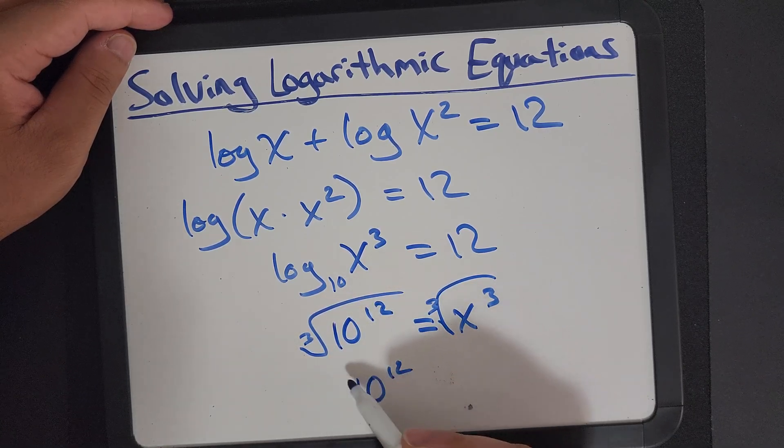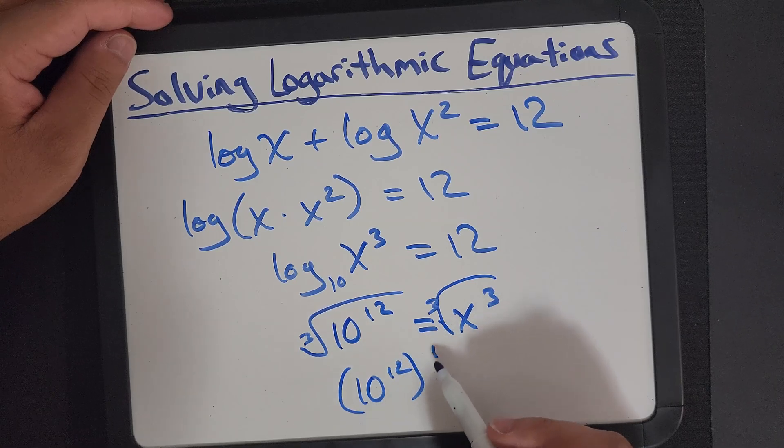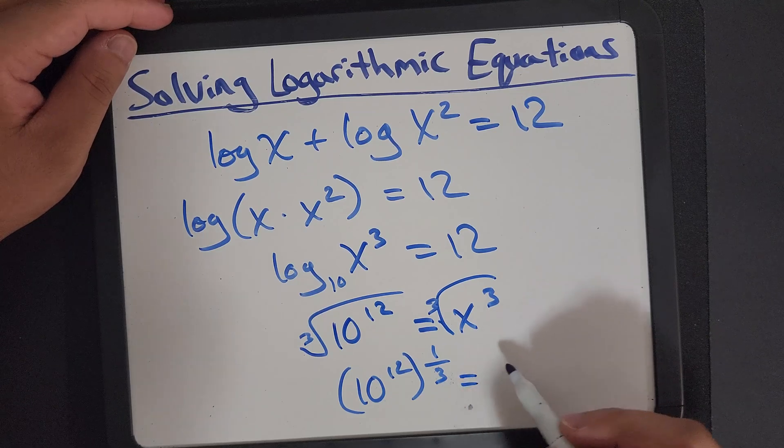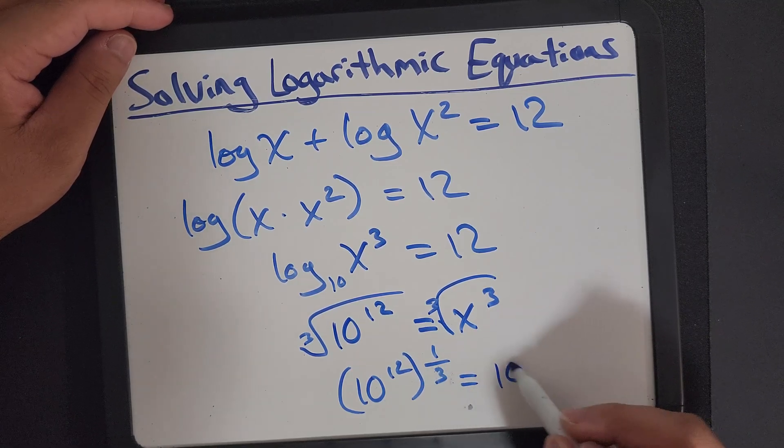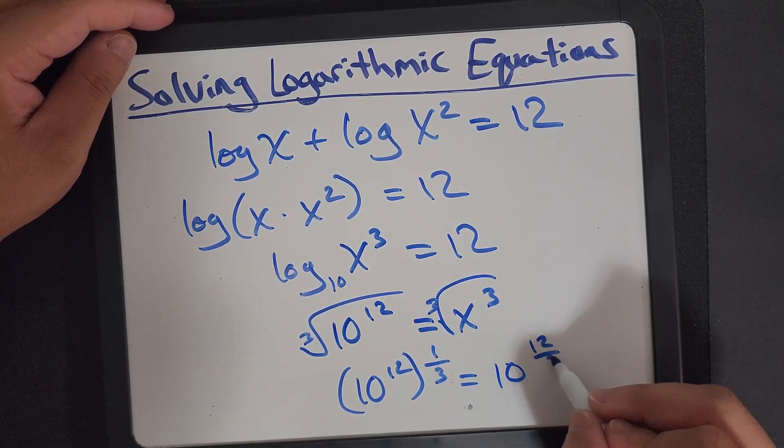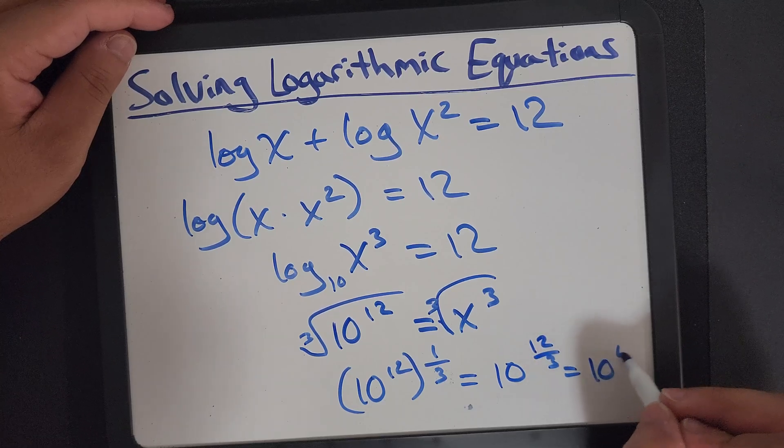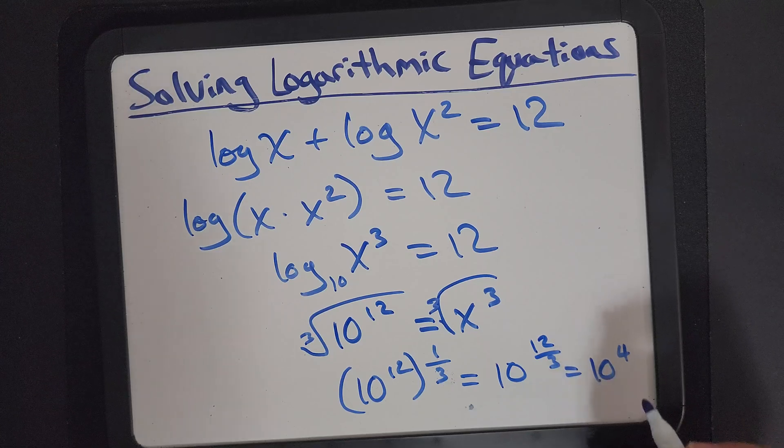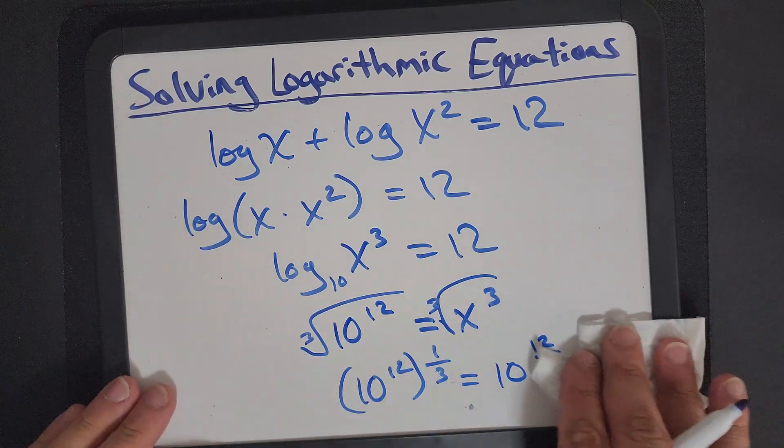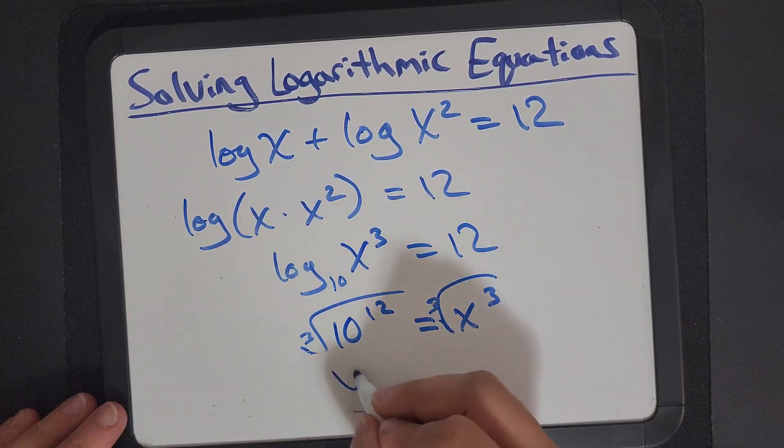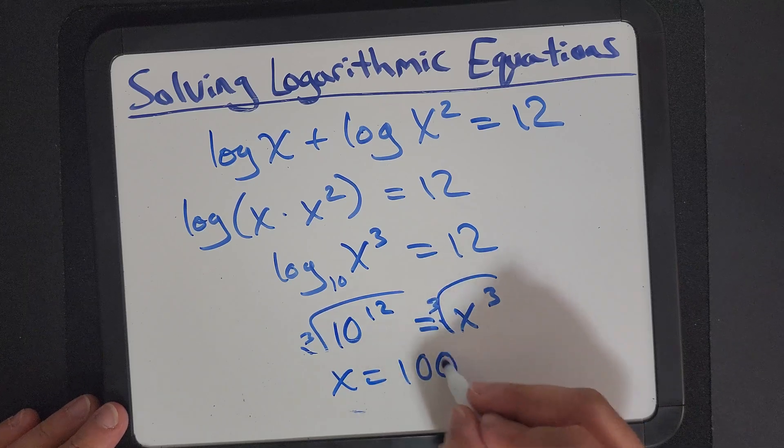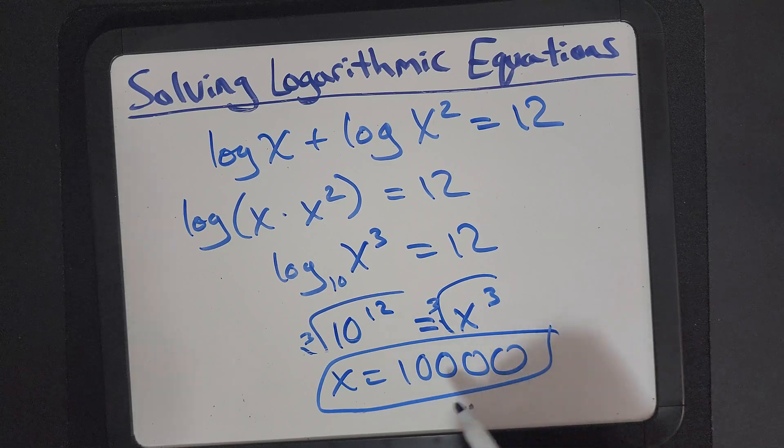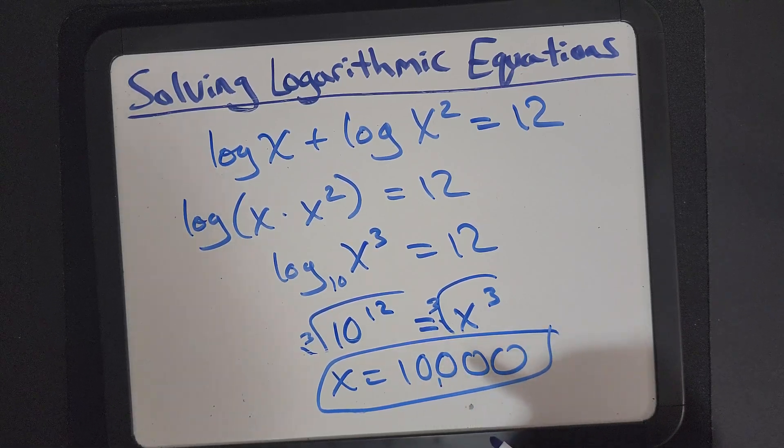If you do have the correct algebra on it, you can just do 10 to the 4, which is 10,000. So we have x is equal to 10,000. Yeah, that's correct.